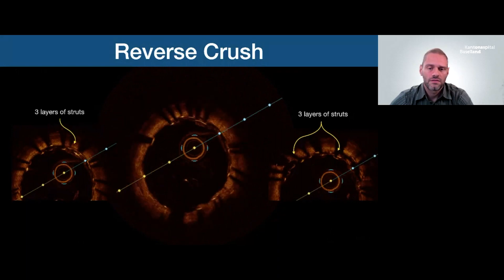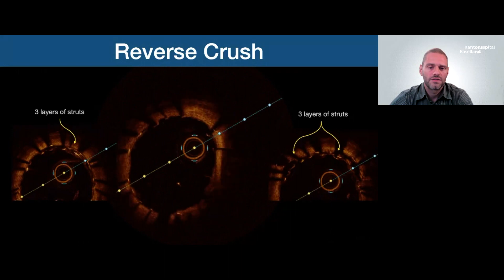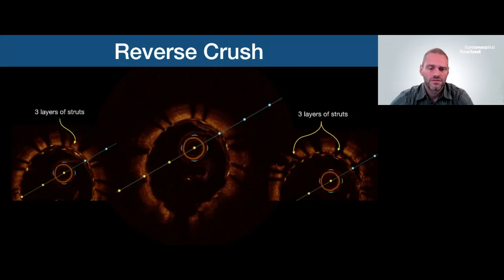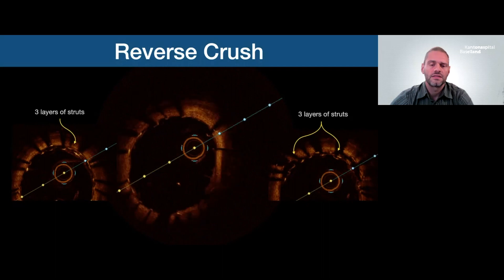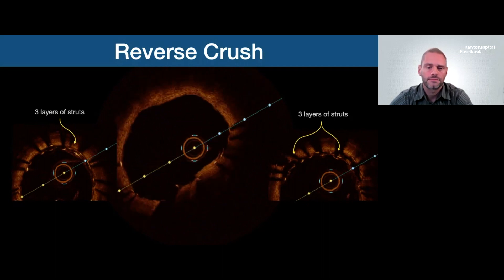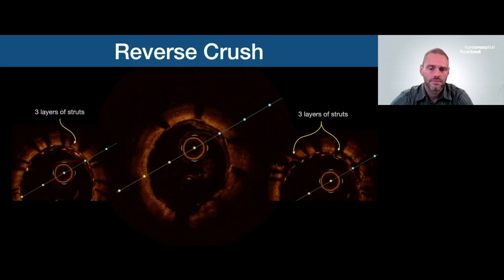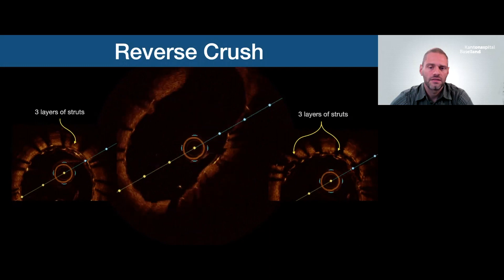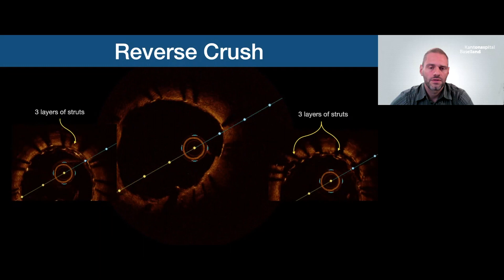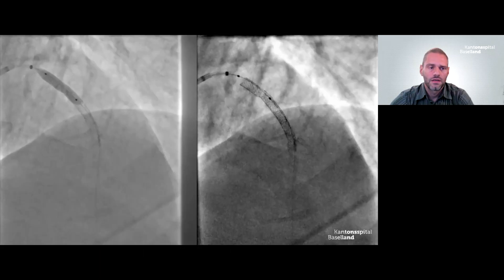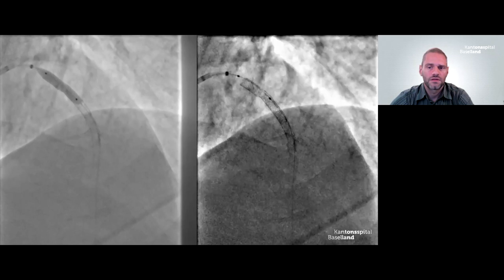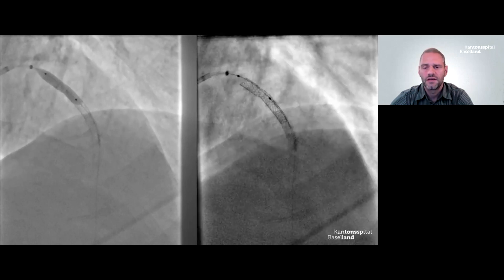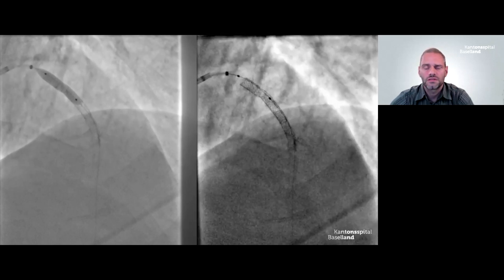Following the OCT pullback, you can see three layers at 12 o'clock, then the carina, and then proximally only one layer of stent — which is upside down from what you would expect in a classic crush technique. I also performed a POT for the longitudinally distorted proximal end of the Synergy, and Clear Stent Live nicely shows the struts of the Megatron well-expanded.